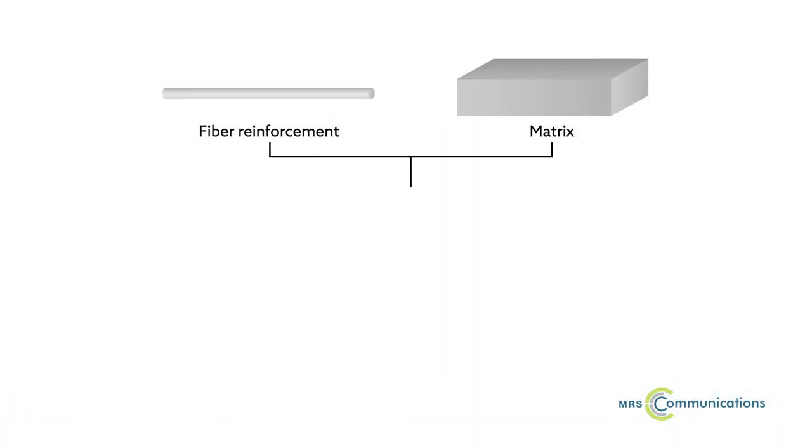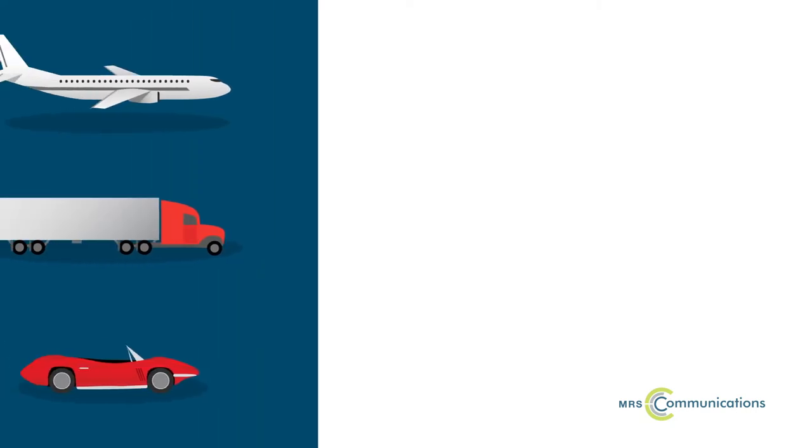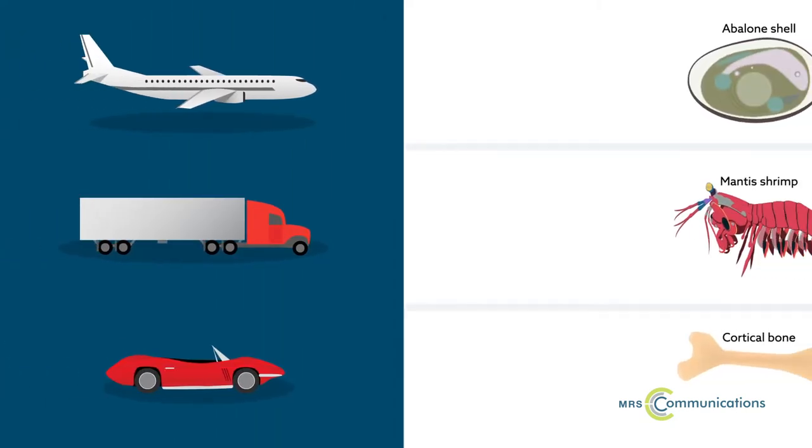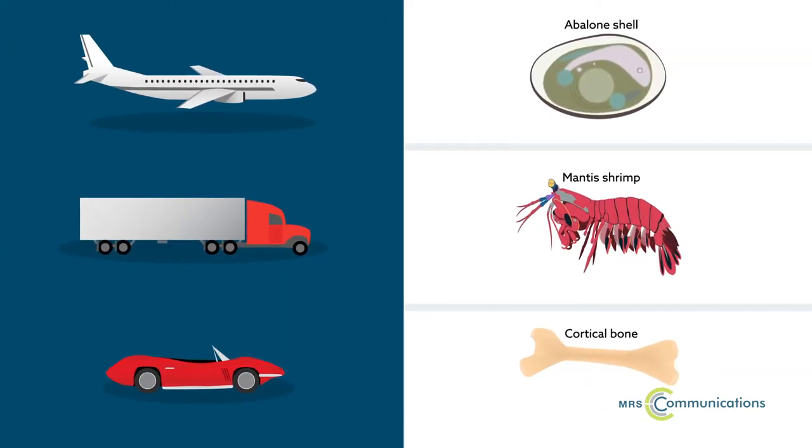Composites are combinations of two or more base materials whose collective properties exceed those possessed by either material alone. Composites are widely used as structural materials in the automotive and aerospace industries and can also be easily found in nature.